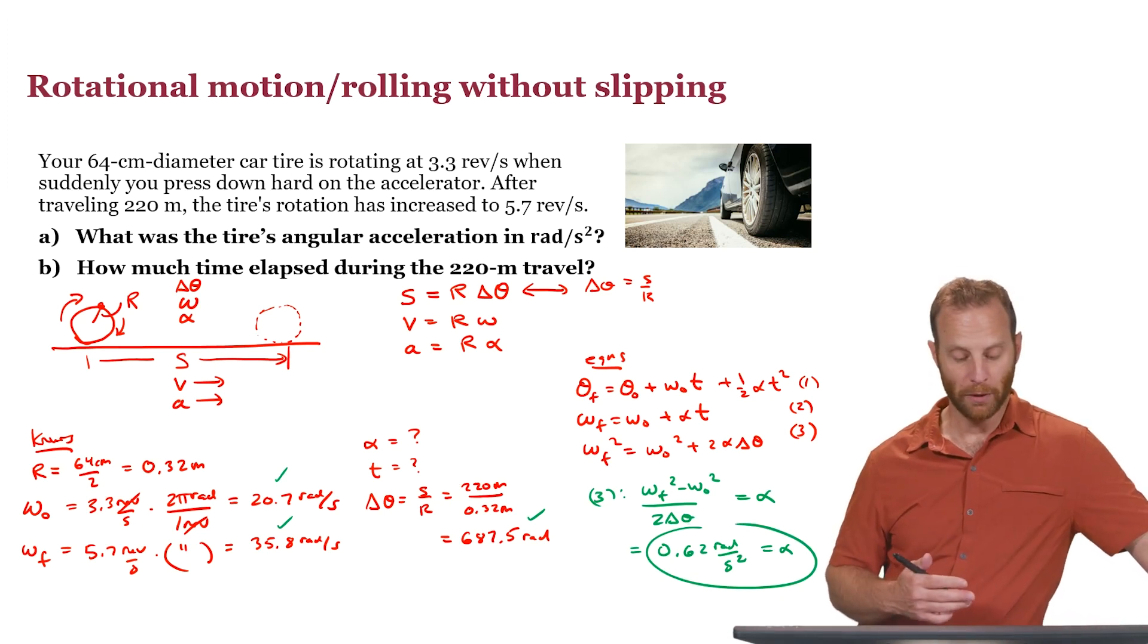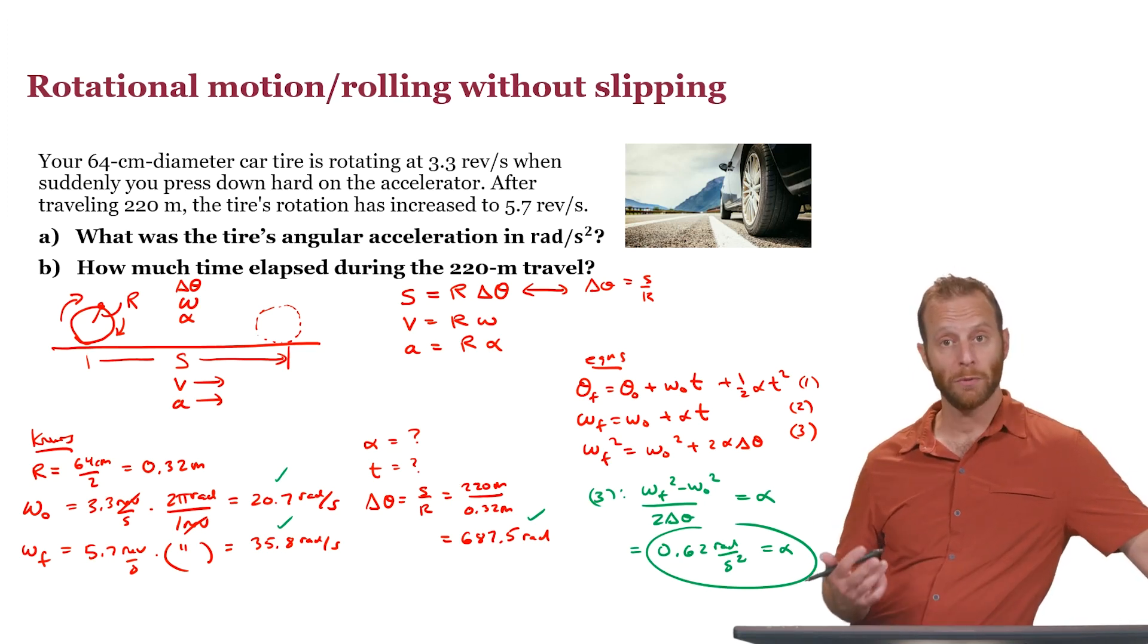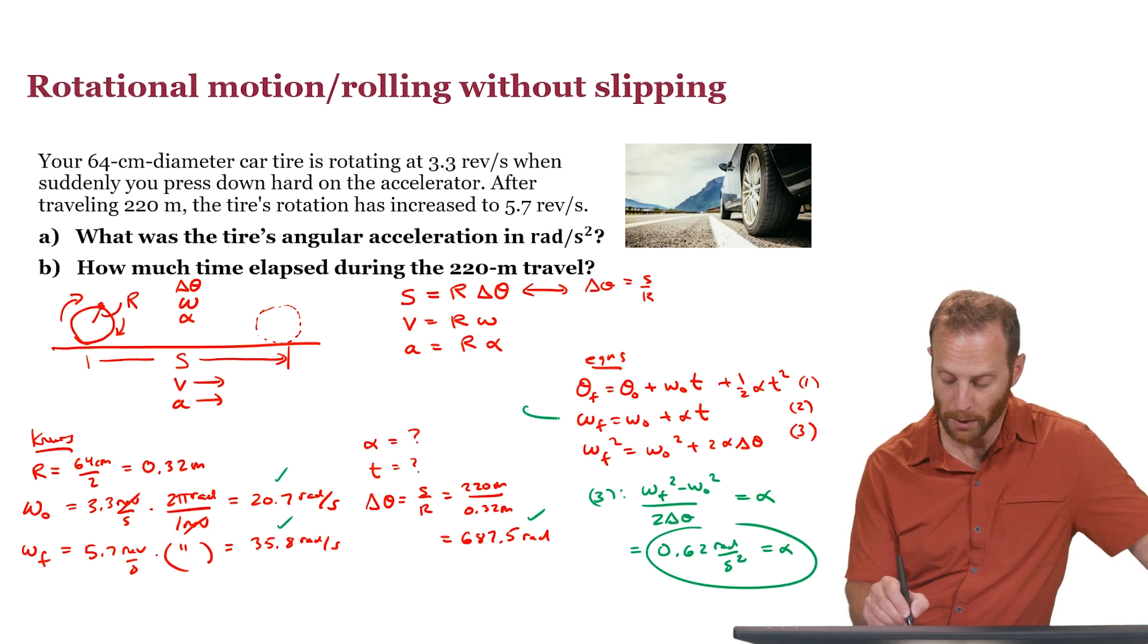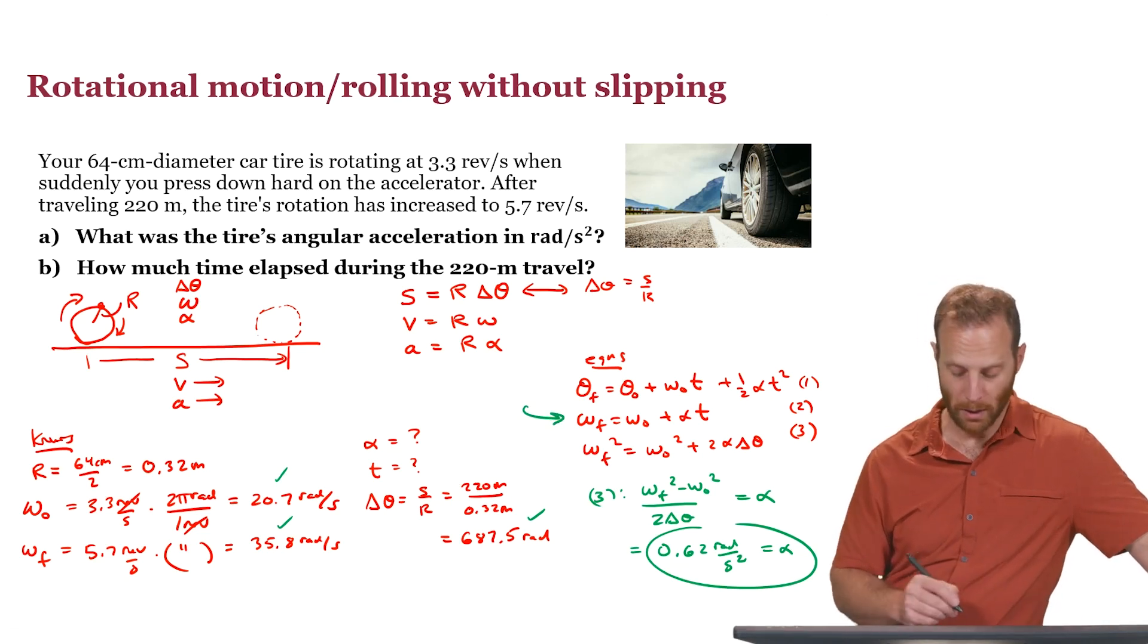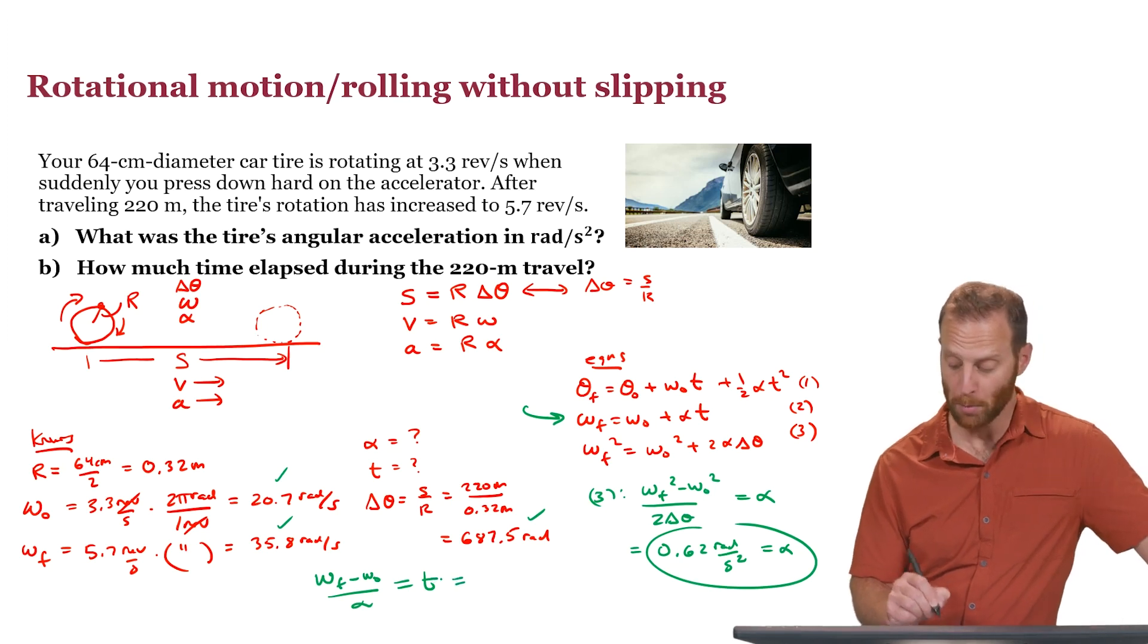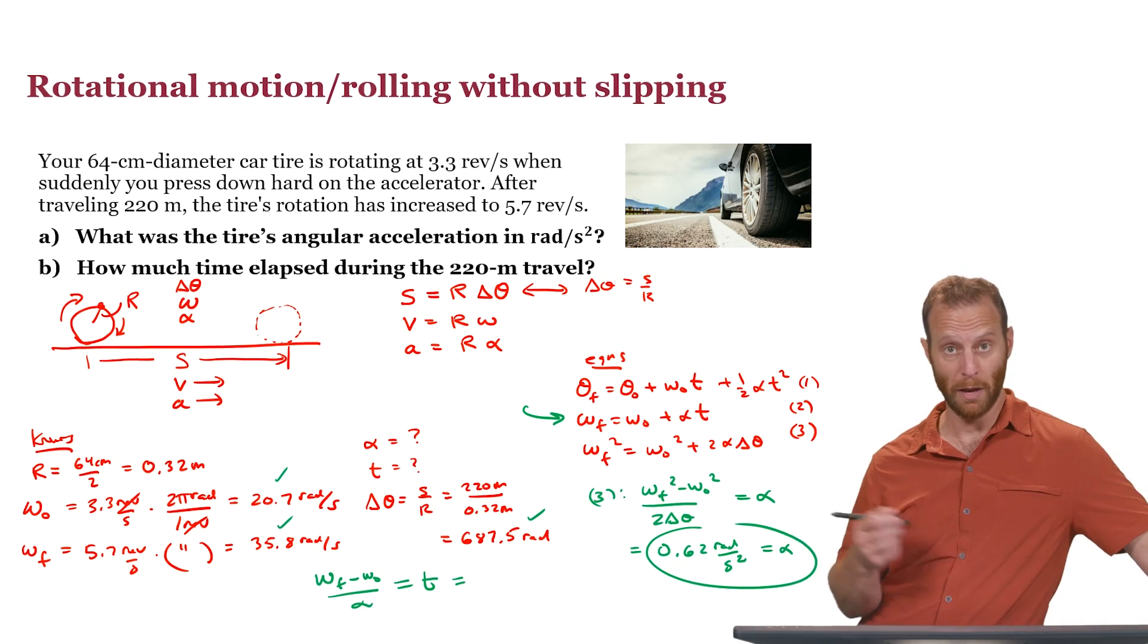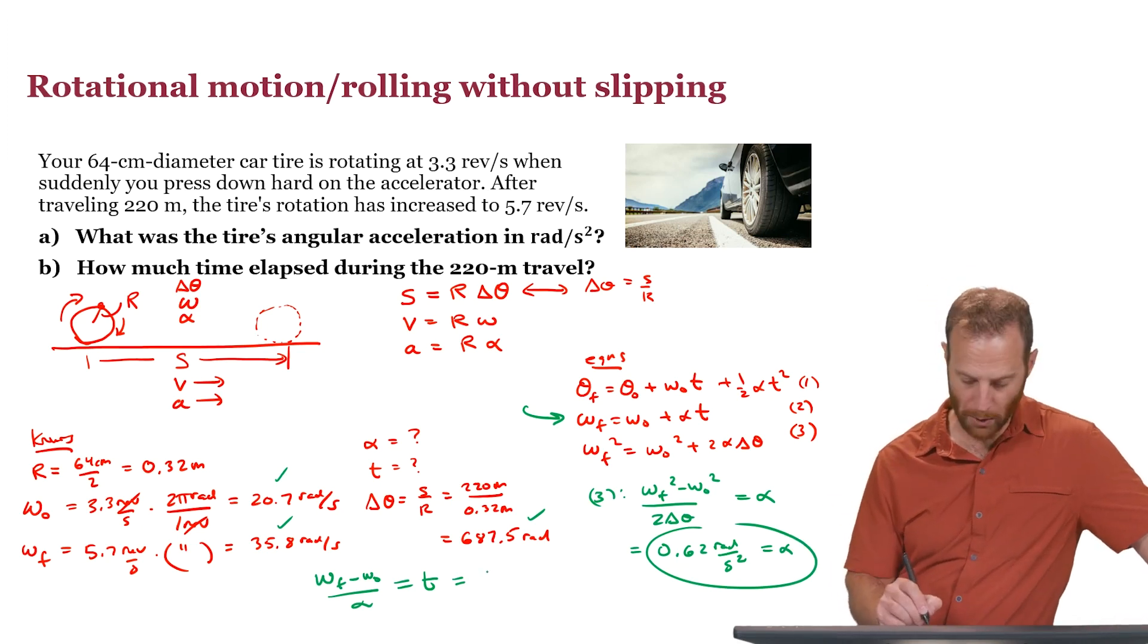In part B, we want to figure out how much time has elapsed during that travel. At this point, we could use any of these equations that involves time. The simplest one is this one. We can rearrange and write that as omega final minus omega naught, divide that by alpha, and that will give us the time. Plugging in those numbers, we'll find that the time is about 24 seconds.